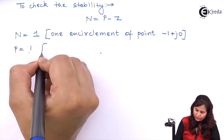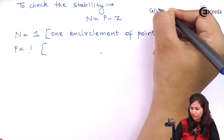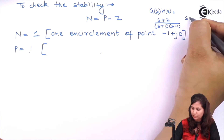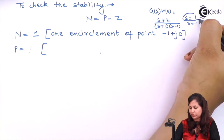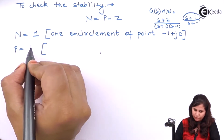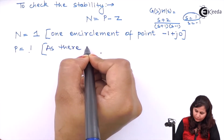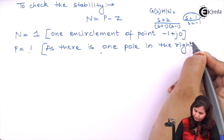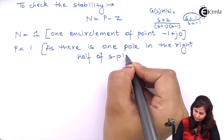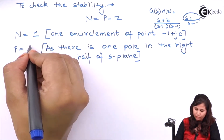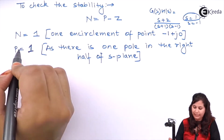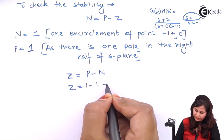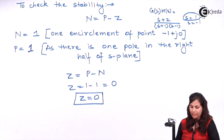P is also 1 because the transfer function G(s)H(s) = (s+2)/((s+1)(s-1)) has poles at s = 1 and s = -1. One pole lies on the right-hand side of the s-plane, so P = 1. Putting values into N = P - Z gives Z = P - N = 1 - 1 = 0.